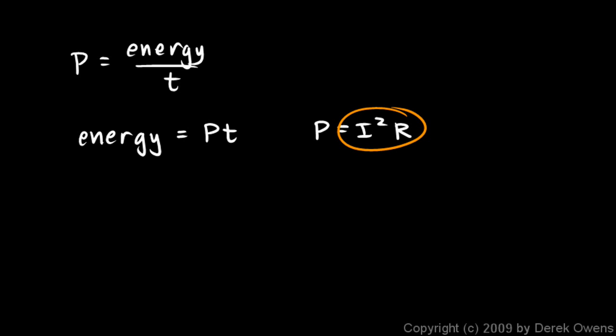Now, remember that power is energy over time. Power is energy over time. Now, solve this equation for energy. When we solve this for energy, we say energy is power times time, or just Pt. Now, let's substitute. Let's take this P equals I squared R. Take this expression for P, I squared R, and substitute it right there. And we get energy is equal to I squared R times t.